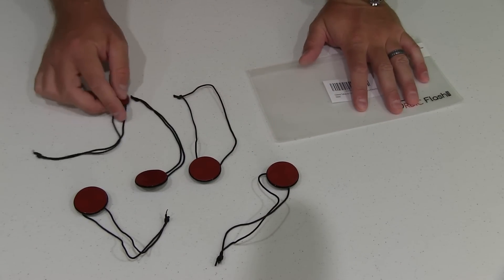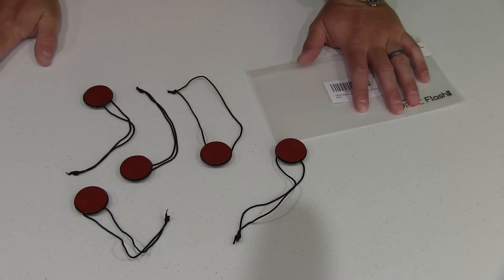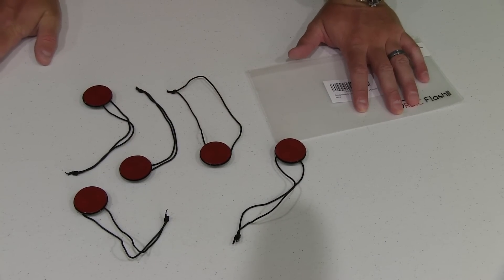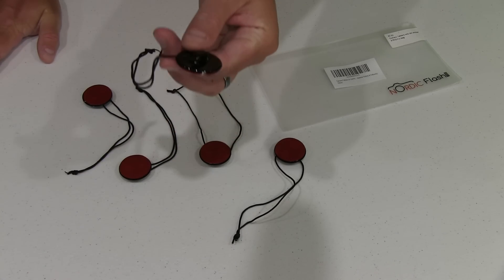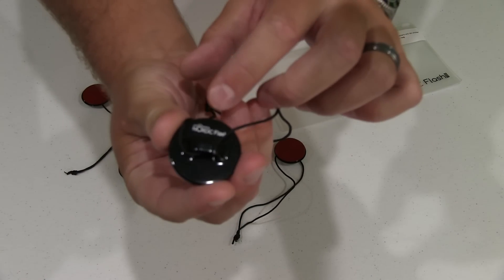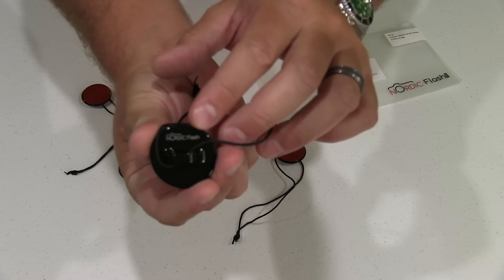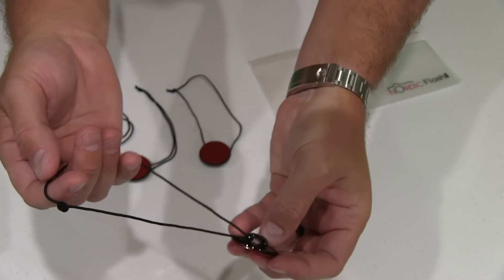So what would you use these for? If you haven't dealt with a GoPro camera you might not fully appreciate the value of this. Basically what this is, looks like a little button that says Nordic Flash and then it's got a hole there that this tether goes through.